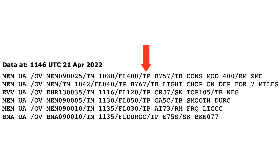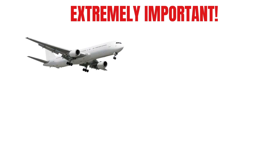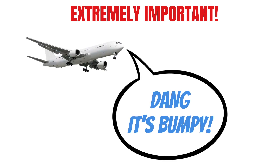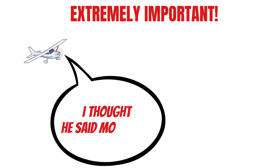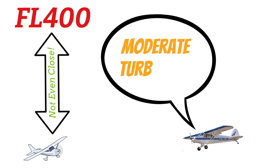TP stands for type of aircraft — for example, a Boeing 757 or a CRJ7. This is extremely important, especially for turbulence PIREPs. If a Boeing 757 is reporting moderate turbulence, you definitely don't want to fly a Cessna 152 through that, because what's moderate for the 757 could be severe or even extreme in a smaller airplane. Pilots report moderate turbulence at low altitudes all the time, so aircraft type matters a lot.